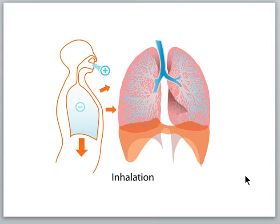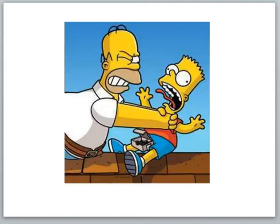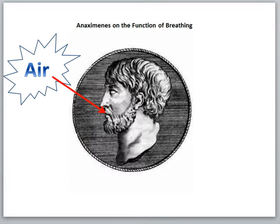Because breathing was an obvious sign of life, early thinkers believed that understanding this process might shed light on the phenomenon of life. An ancient philosopher by the name of Anaximedes speculated that air was the most important element in the cosmos — the principal substance from which all other elements were made. He noted that life could be extinguished if this invisible stuff was deprived from the human body, and hypothesized that the function of breathing was to take in this vital material and thereby maintain life.